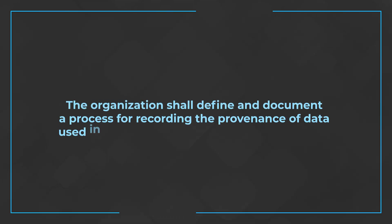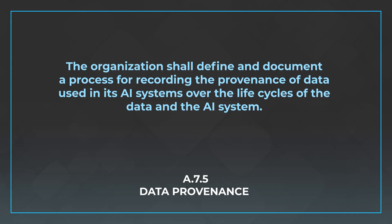The next control is A.7.5, Data Provenance. Provenance means the origination, or where something came from. This control is centered around where the data you're using originated from. It says the organization shall define and document a process for recording the provenance of data used in its AI systems over the life cycle of the data and the AI system. You need to document the entire process for where you get your data from and how you're incorporating it into your ecosystem — including whether you're pulling from public data sources, how they got it, and where it originated from.